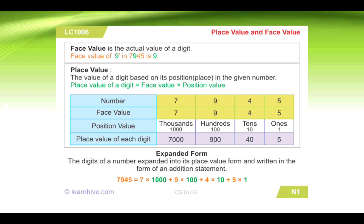Using the number 7945, we will find the face value and place value of each digit. The face value of every digit is the digit itself. The place value of 5 is 5 × 1 = 5. The place value of 4 is 4 × 10 = 40. The place value of 9 is 9 × 100 = 900. The place value of 7 is 7 × 1000 = 7000.